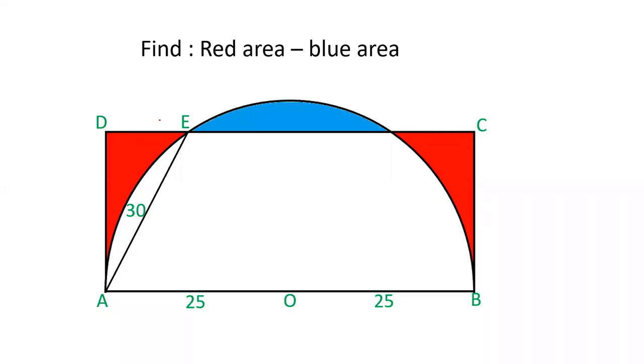Hello friends, welcome to our YouTube channel SSA Selector. In this video I'll explain how to find out the difference of the area of region which is colored red and the area of the region which is colored blue. There is a rectangle given ABCD. In this rectangle the length of the rectangle is AB which is 50. O is the center of semicircle that is on AB. There is a semicircle drawn taking AB as diameter.